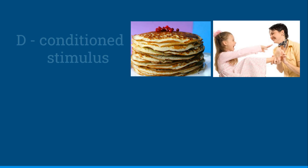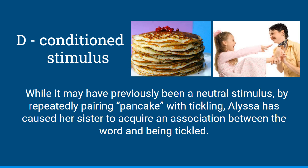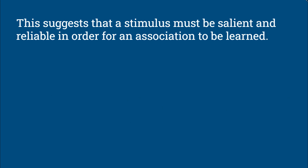So this would be D, conditioned stimulus. While it previously would have been neutral, by pairing 'pancake' with tickling, Alyssa caused her sister to acquire an association between the word and being tickled. So now she squirms when she hears the word because she expects to be tickled. This suggests that a stimulus must be salient and reliable in order for an association to be learned.